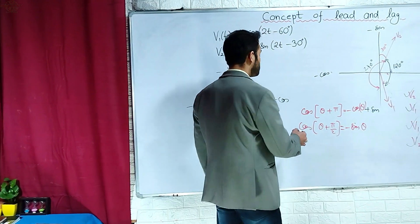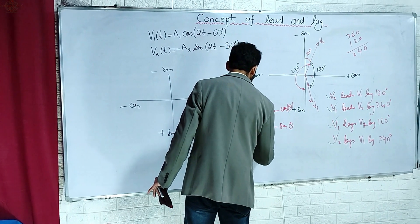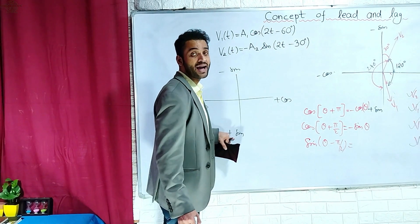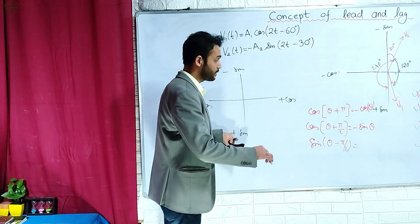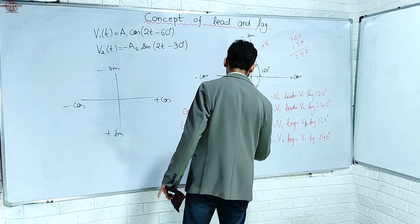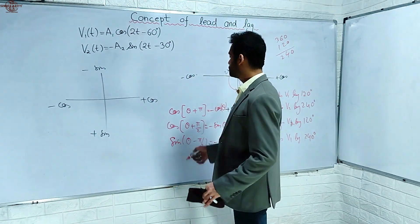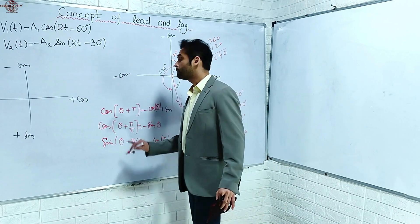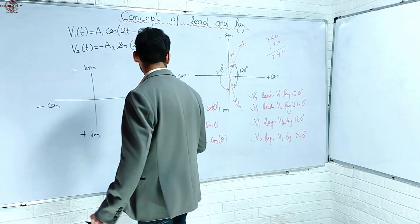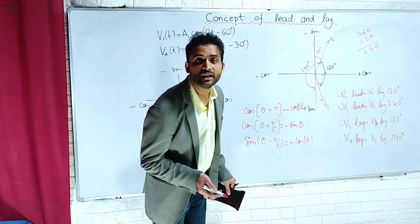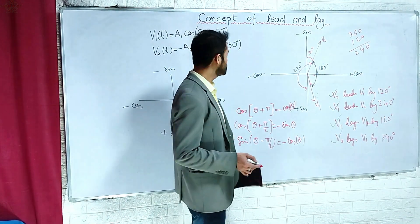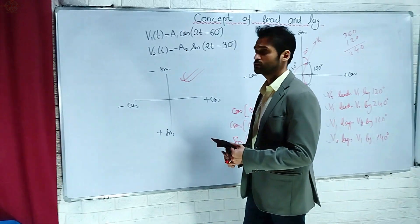You can easily derive it from this figure. Similarly, for sin(θ - π/2): start at plus sin, go minus 90 degrees clockwise, and you reach minus cos. So the answer is minus cos θ. This way, for any combination of π, 2π, π/2, 3π/2 - any multiple of π/2 - you can derive the result using this figure.